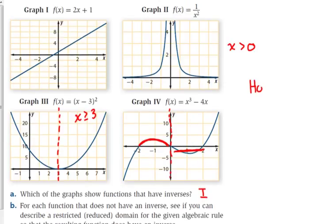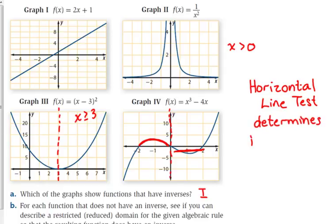So the horizontal line test determines if the inverse will be a function. It works just like the vertical line test. You can only touch one point at a time. If you touch more than one point, it fails, so it would not be a function. They may just give you a graph and ask, is the inverse of this function a function? You've just got to look at it, does it pass the horizontal line test?